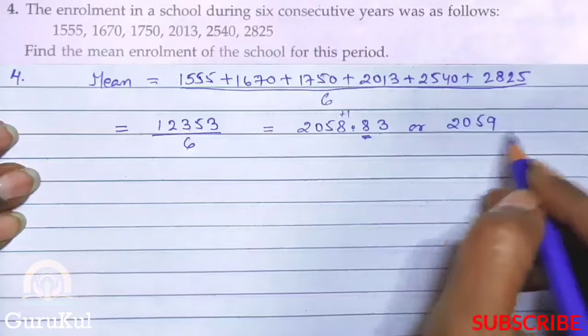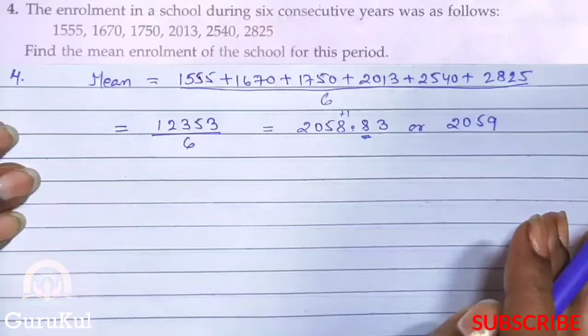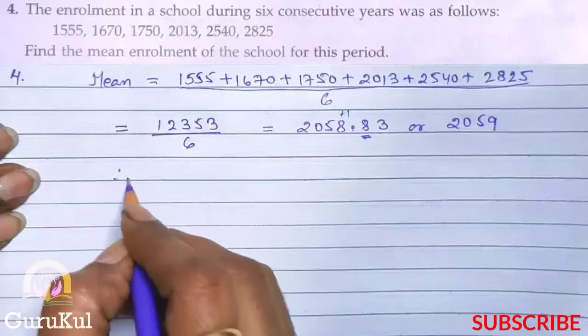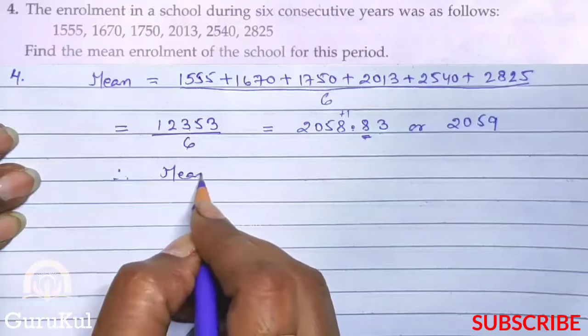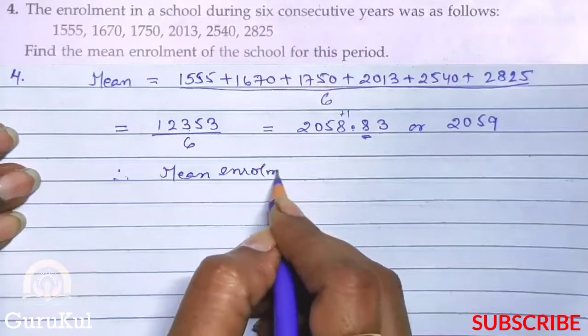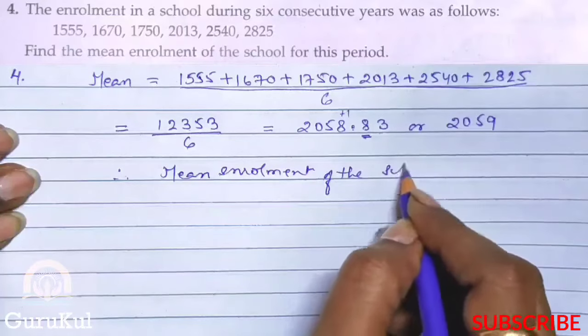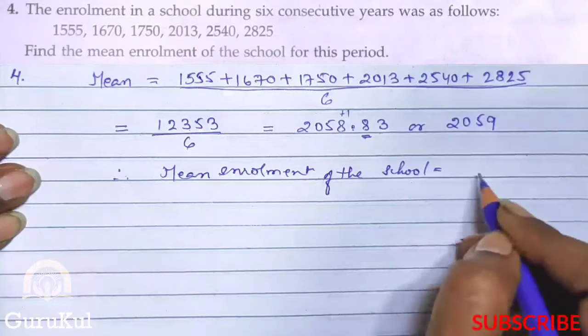2059. This is the proper answer without any decimal. We will remove the decimal, right? Therefore mean enrollment of the school is equal to 2059.